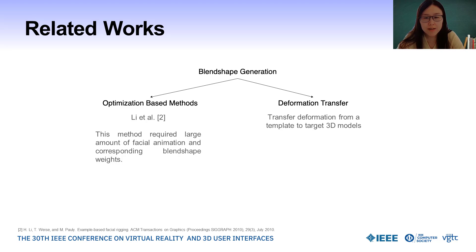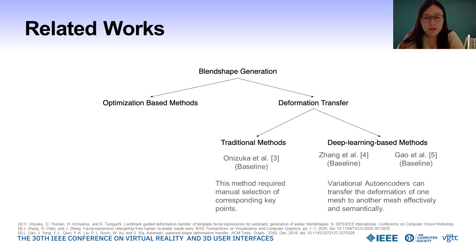With a pre-defined set of blend shapes, such as the 52 standard blend shapes provided by ARKit for human avatars, we can treat these blend shapes as a template and transfer the deformation from the template avatar to our target avatar. This is a more accessible solution compared to previous methods. The conventional deformation transfer approach involves transferring motion from vertex and surface matrices based on correspondence between the source and target models. However, establishing this correspondence requires manual labeling of key points to register the models, which may be easy for human faces but very difficult for stylized characters.